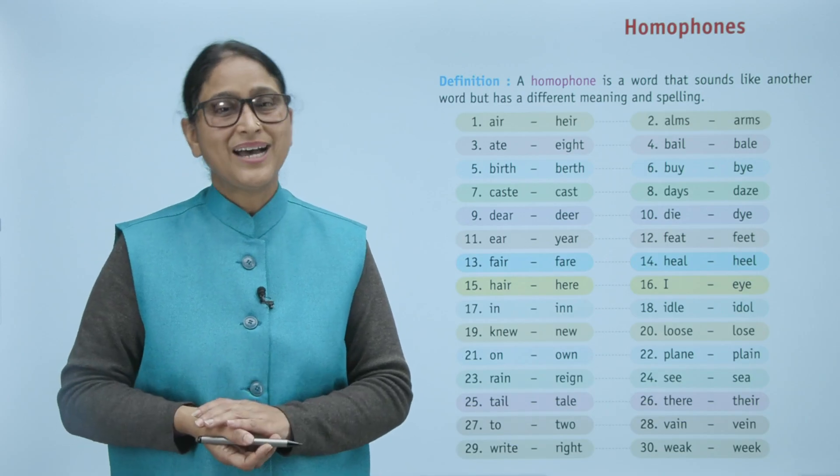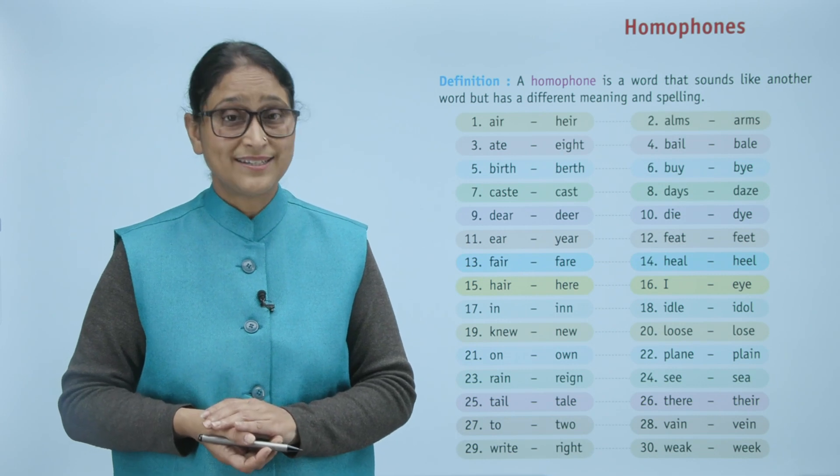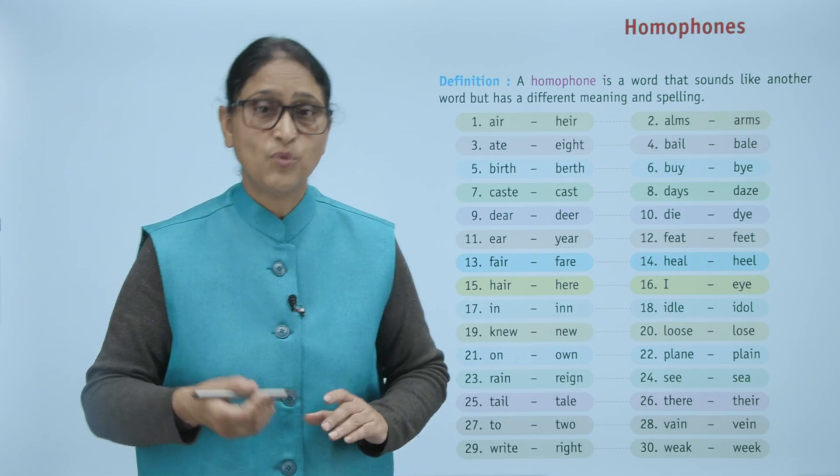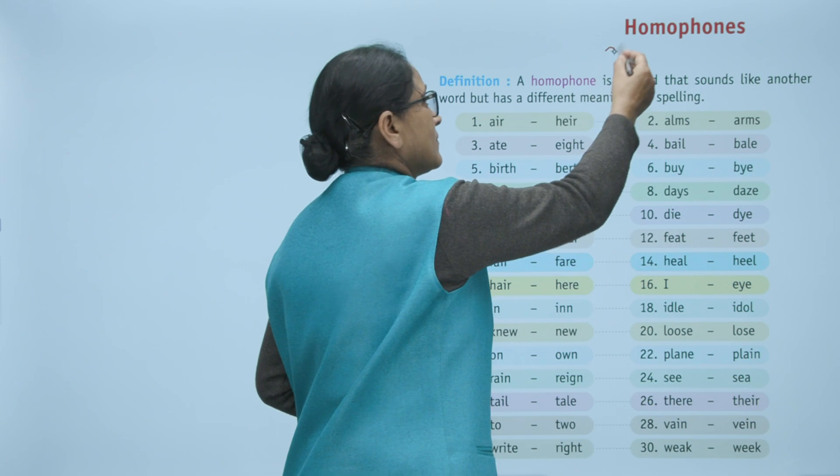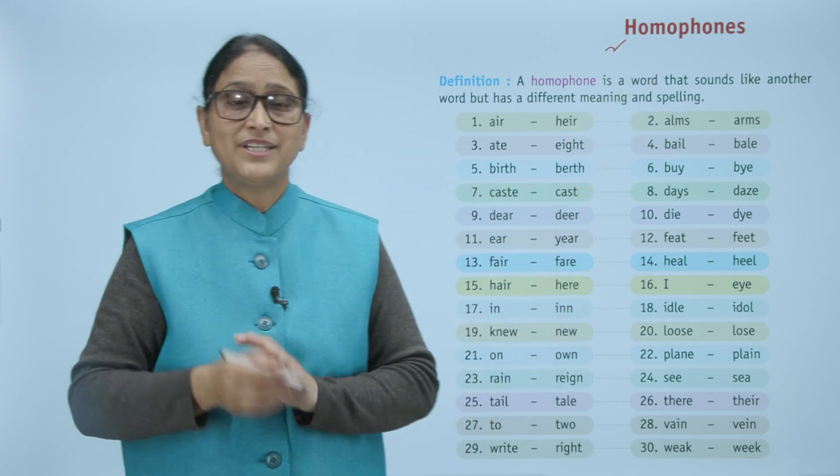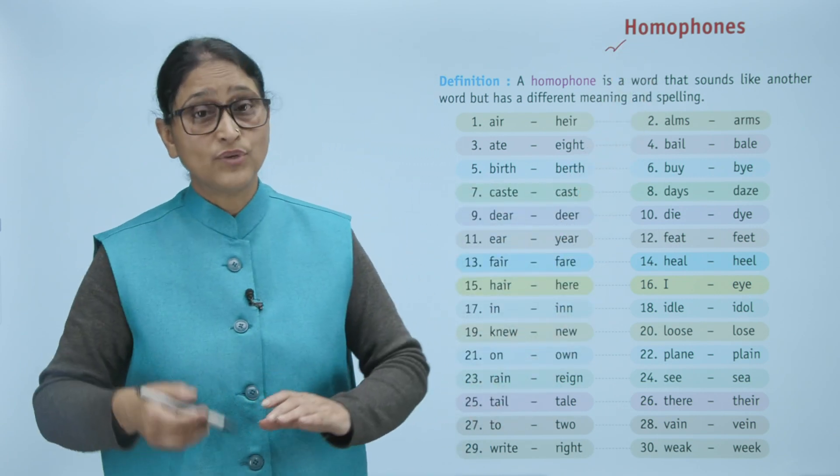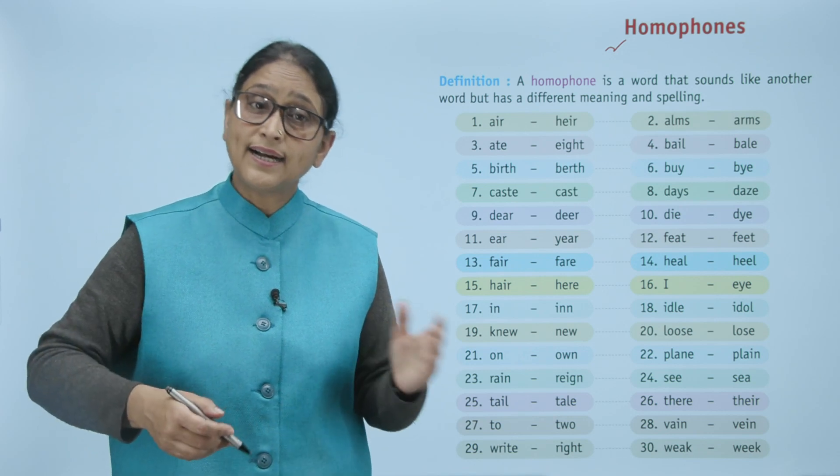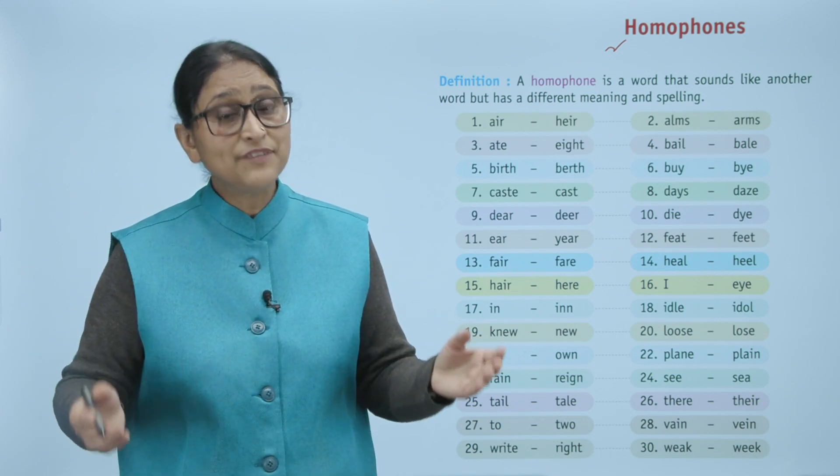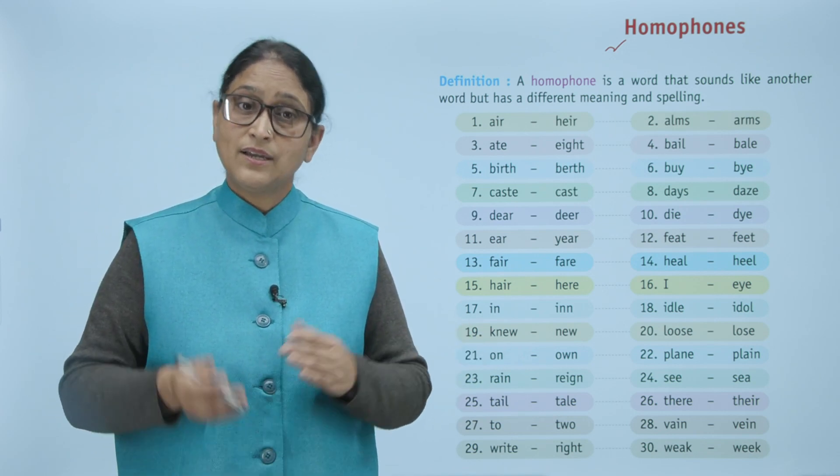Hello children, how are you? I hope you all are doing good. Children, now we will do homophones. Now definition: a homophone is a word that sounds like another word but has a different meaning and spelling.